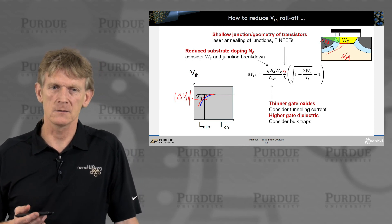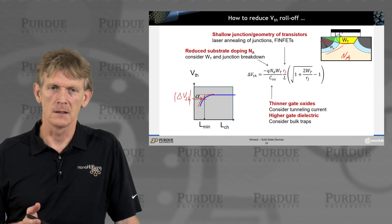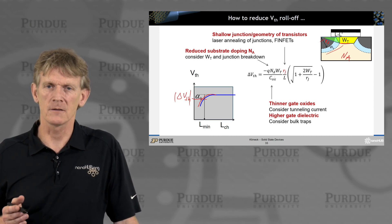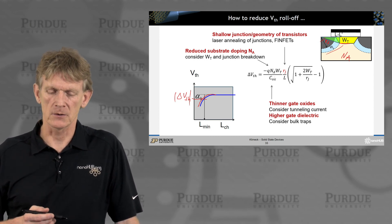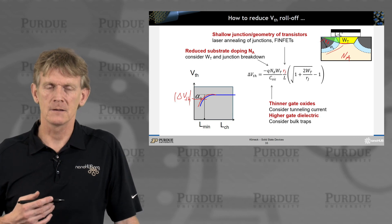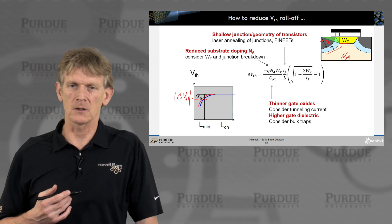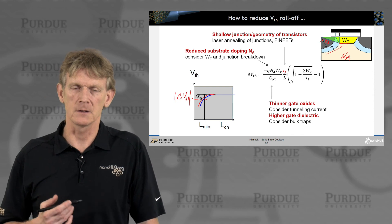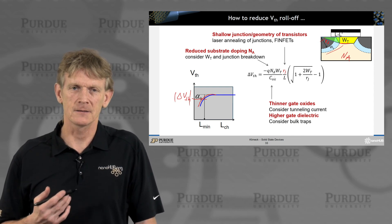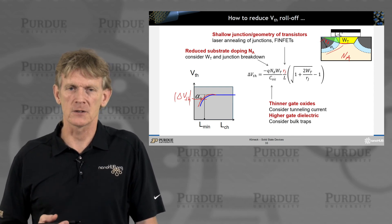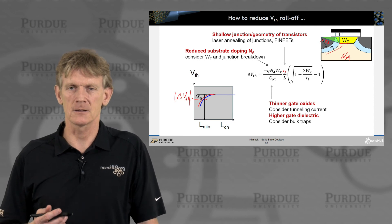You can also have a higher gate dielectric, and that gate dielectric shows up here in the capacitance again. If you increase your K, you can reduce the oxide capacitance and therefore reduce the threshold shift. But the facts are that these dielectrics also have bulk traps in them. We talked in the last section on effects of charge in the oxide. That's another challenge.